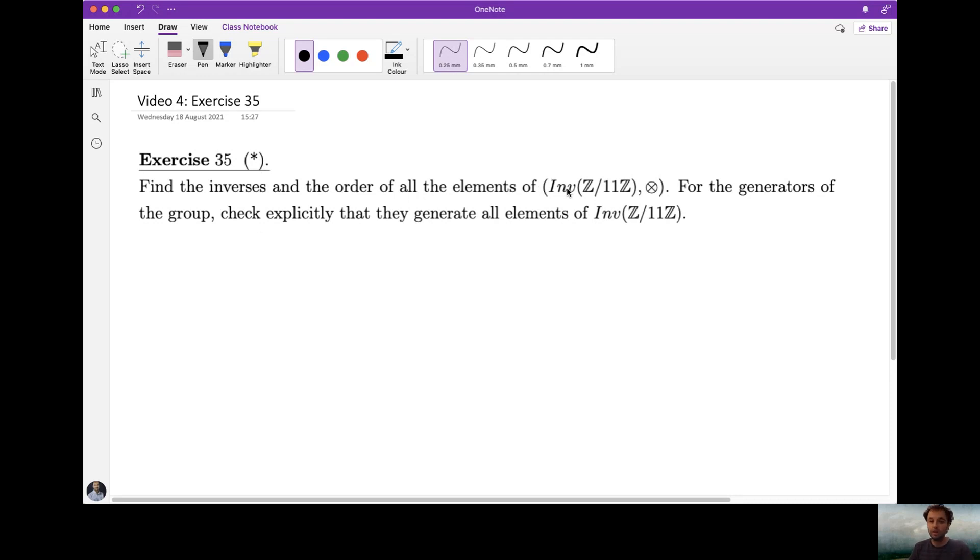Okay good, so here we're working with the group of invertible elements in Z over 11Z, so we're working modular and the binary operation is multiplication. This group is also sometimes denoted by F11 star, so let me write it like this so that you know we work in F11 star with the multiplication. So that's the other notation that we will be using in these lectures for the group of invertible elements when the number, the modular we're working with is a prime number. It has 10 elements and the group is commutative.